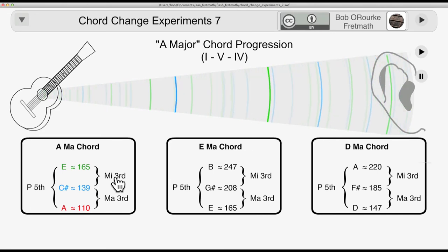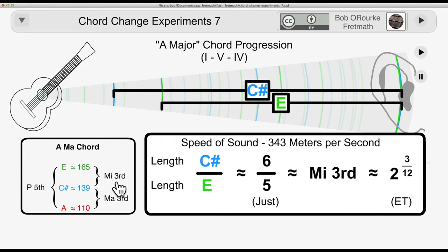Here's the minor third in motion at C sharp to E. Here's the calculations, 6 to 5 for the just intonation, and 2 to the 3/12ths for equal temperament.